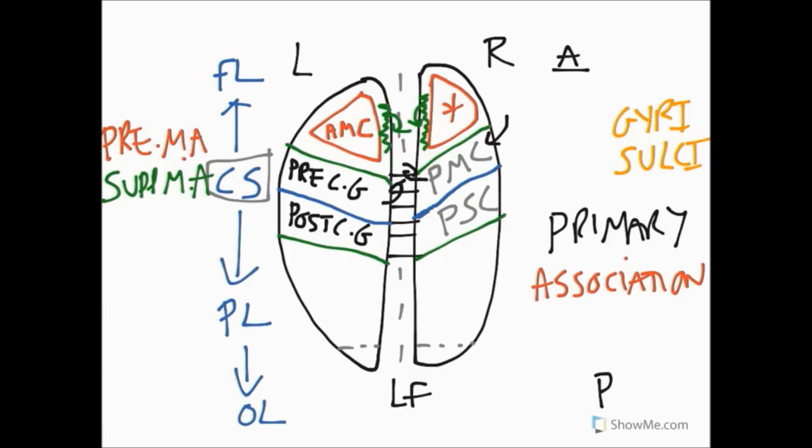The supplementary motor area is much more involved with internal cues. So any thought-directed or drive-directed movement that we think about, that we want to carry out, would be generated by the supplementary motor area first, and then those neurons would communicate with the primary motor cortex in order to carry out that voluntary function. So the association motor cortex is made up of the premotor area and the supplementary motor area.